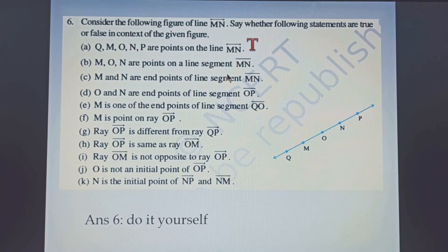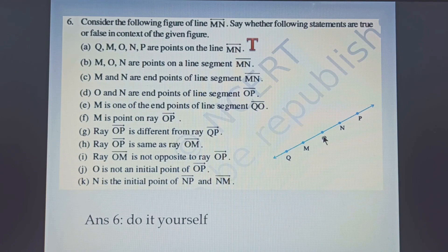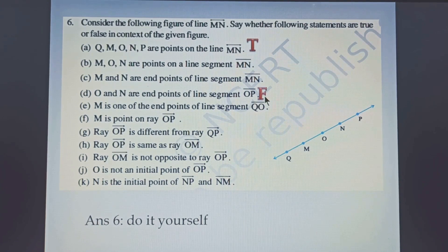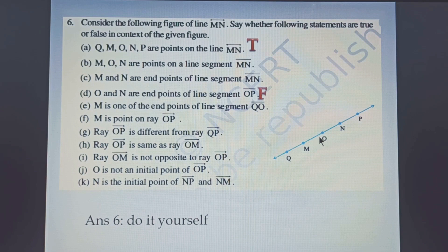Question number D states that O and N are end points of line segment OP. When the line segment is OP, the end points must be O and P. But here it says O and N, so this is false. Question F says M is a point on ray OP. Ray OP goes from O towards P, and M is beyond O in the other direction. So this is false.